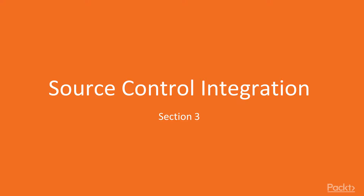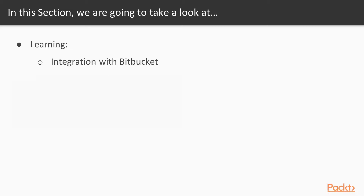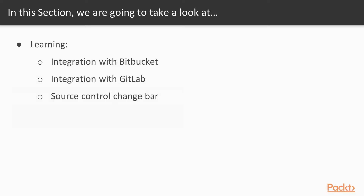Welcome to section 3, where we're going to be looking at some of the source control integration changes made in Xcode 10. In this section, we're going to be looking at integration with Bitbucket, integration with GitLab, the source control change bar, and finally how to easily generate an SSH key within Xcode.